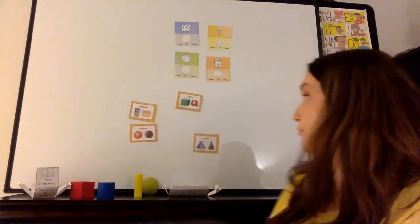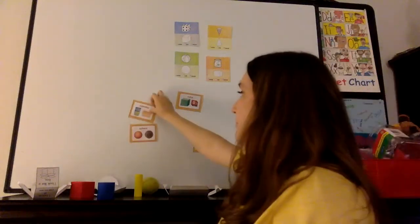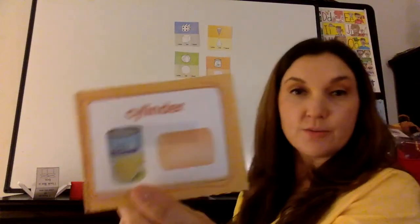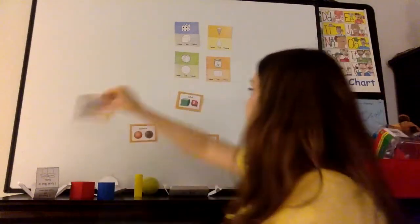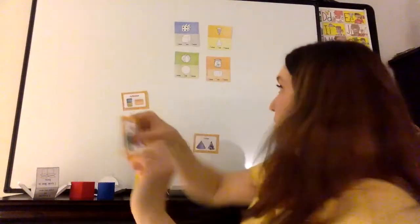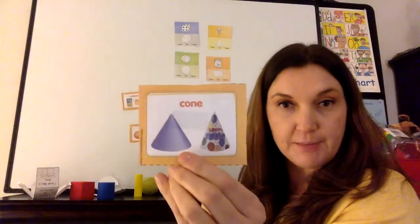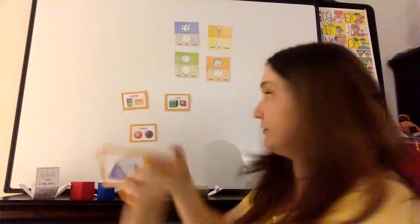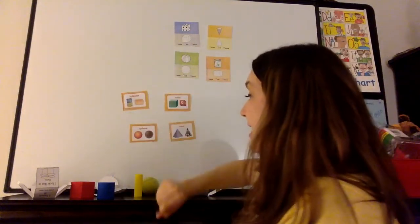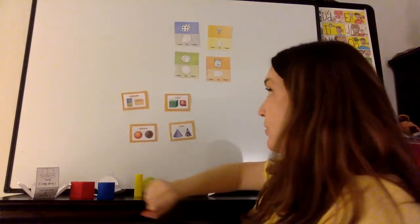All right. We learned four shapes. Let's go over them. This one is a cylinder. This 3D shape is a cube. This 3D shape is a cone. And don't forget about this 3D shape, which is the sphere.